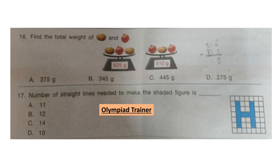Question 17: The number of straight lines needed to make the shaded figure is dash. You can pause the video and count the number of straight lines needed to make the shaded figure, which is H. The answer is option B: 12.